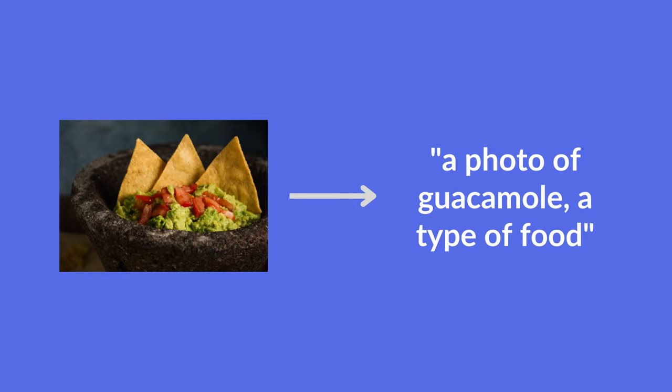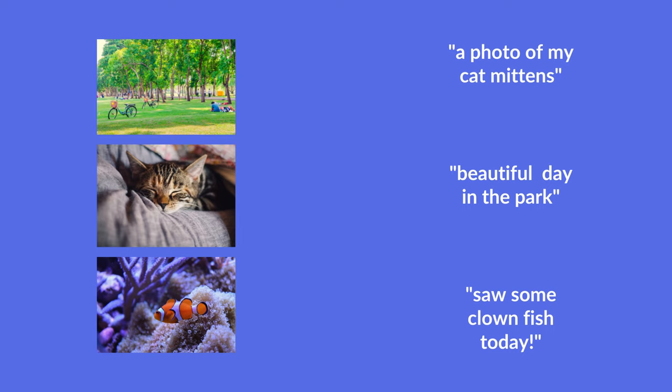To understand how CLIP is used in DALL-E 2, let's take a closer look at what CLIP is. CLIP is a neural network model that returns the best caption given an image — so it basically does the opposite of what we want to do with DALL-E 2, but it is still helpful. It is a contrastive model, so it doesn't try to classify images. Instead, it matches images to their corresponding captions.